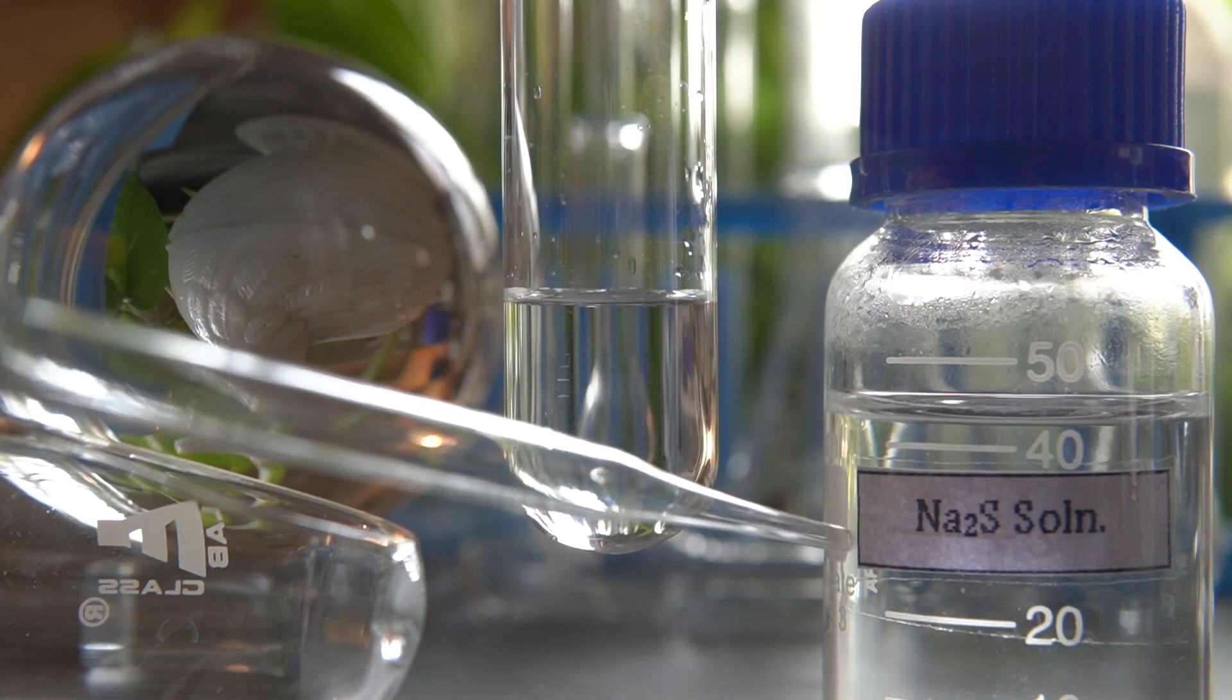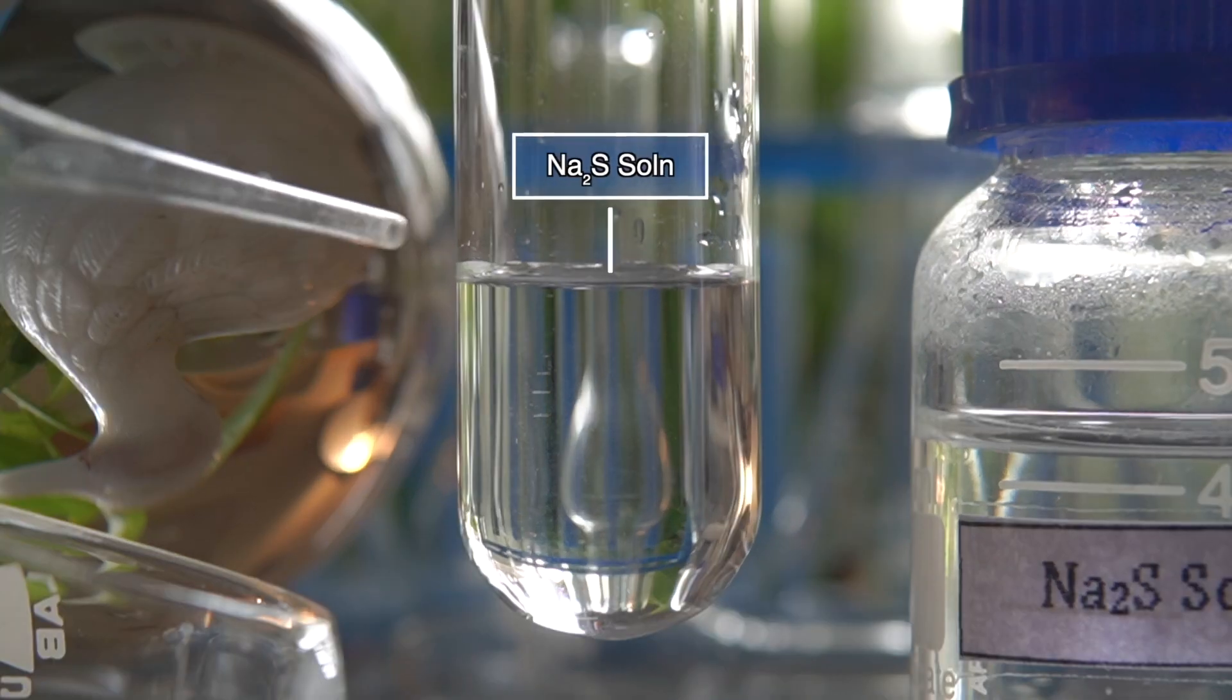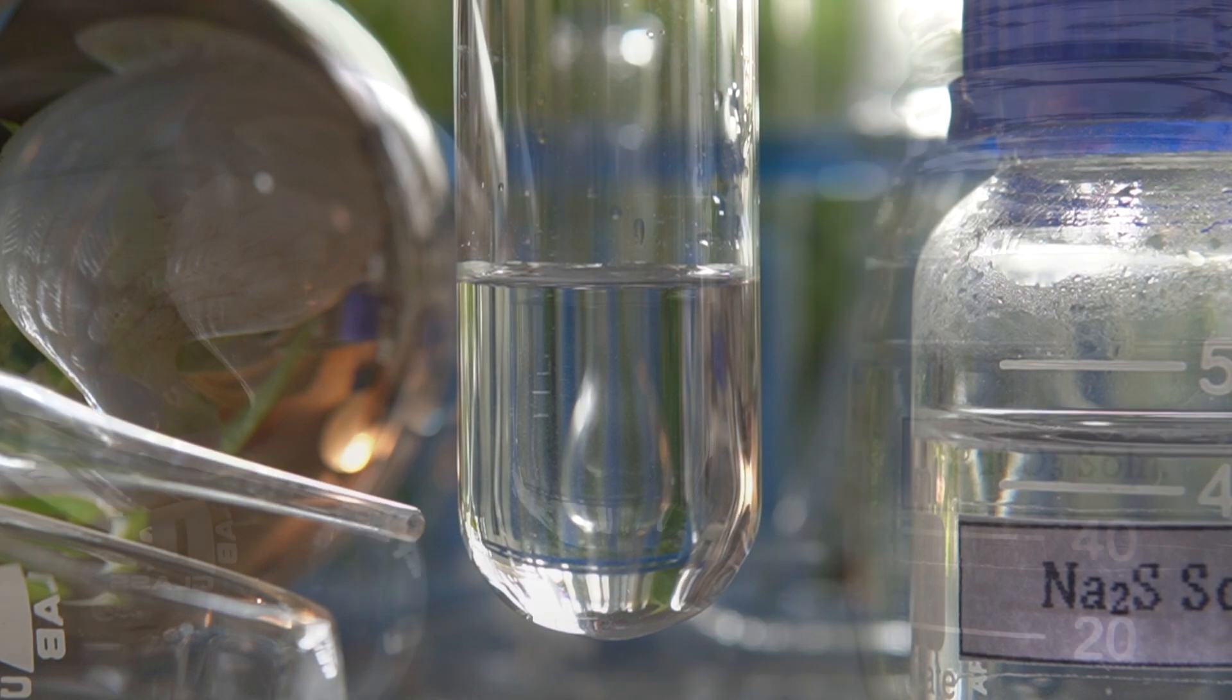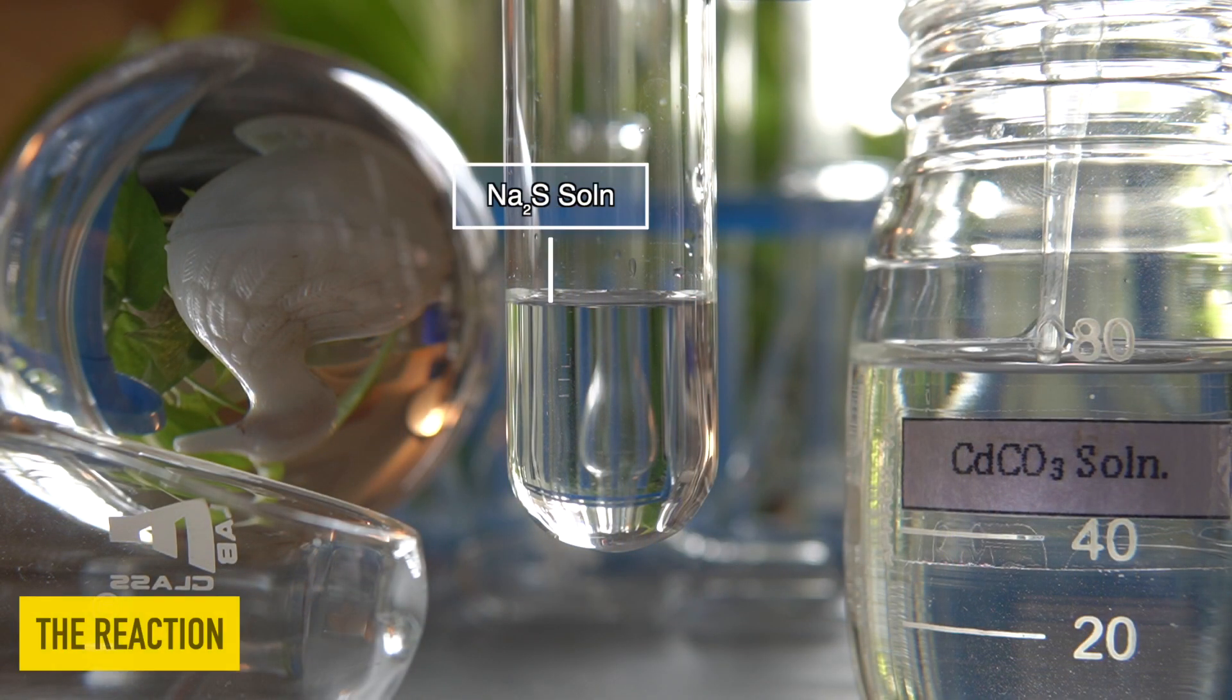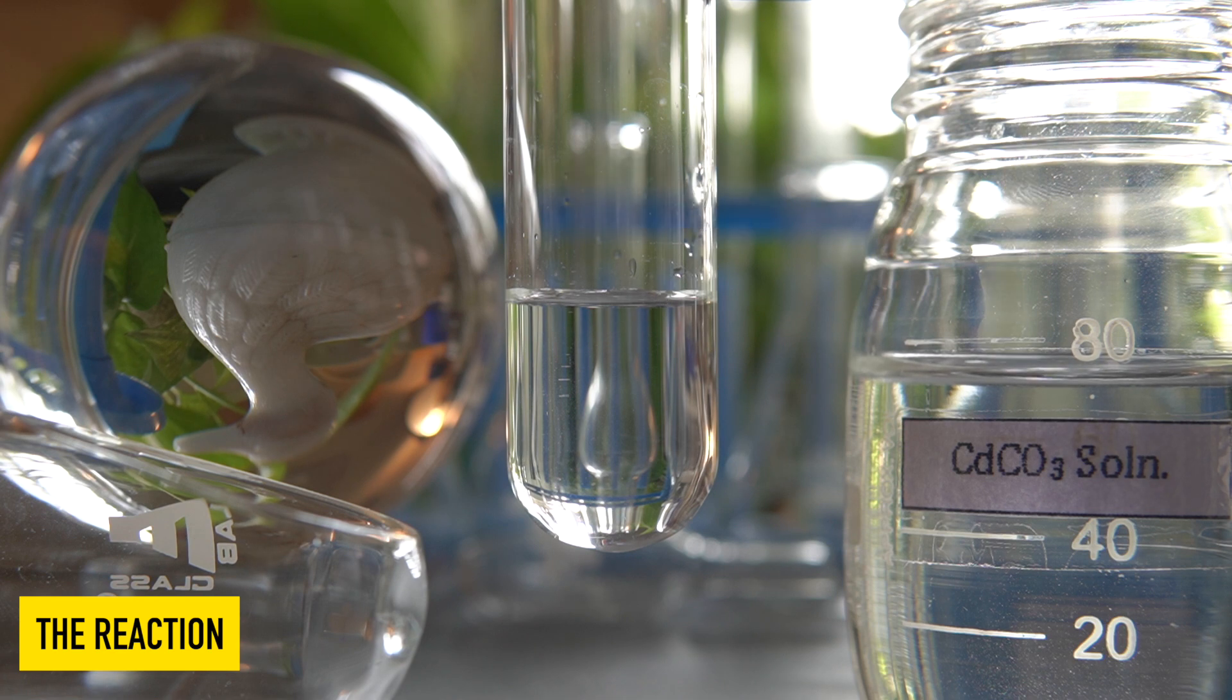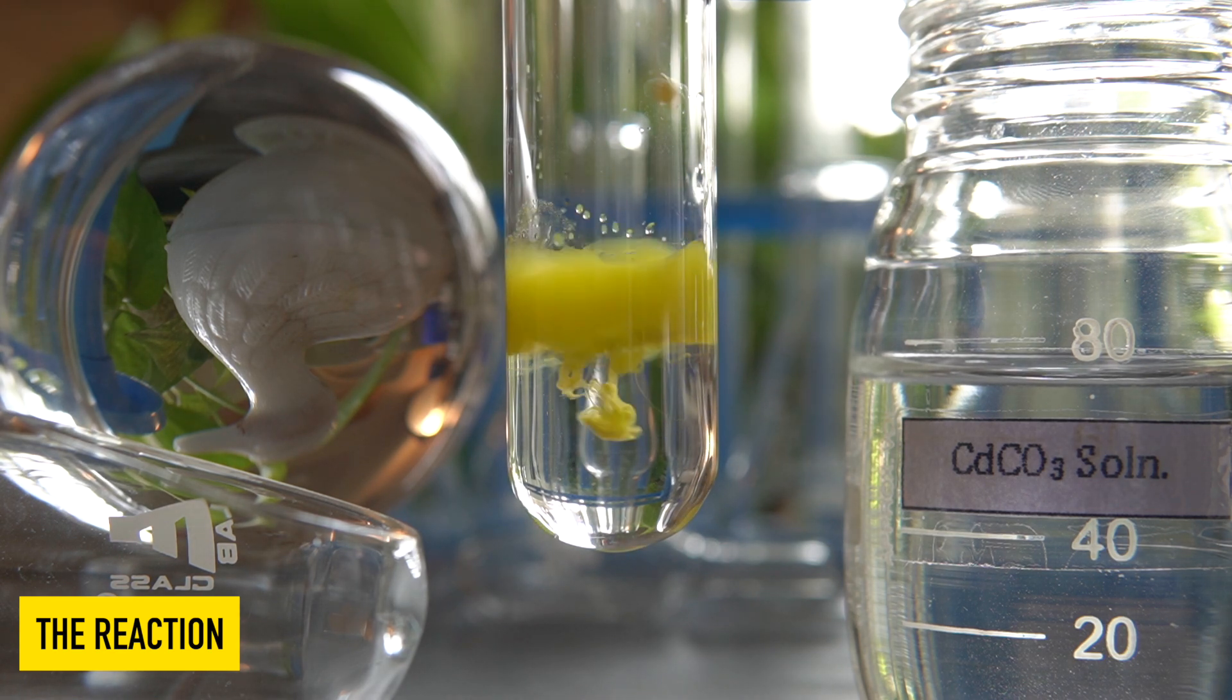Now to initiate the chemical reaction, we will take some amount of clear solution of sodium sulphide into this test tube. Now we will add the clear solution of cadmium carbonate into sodium sulphide dropwise and observe the effects.